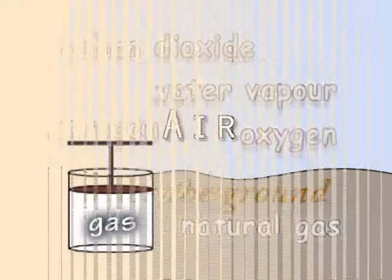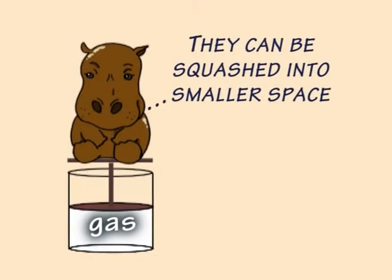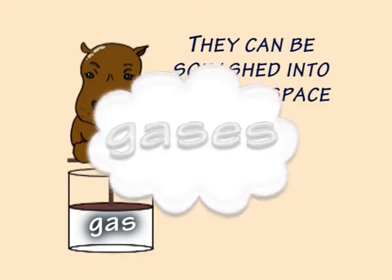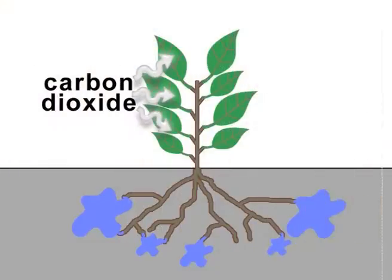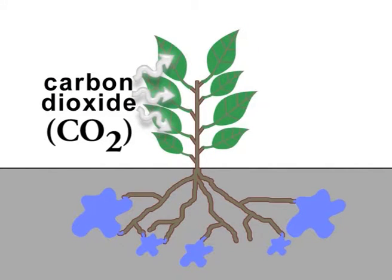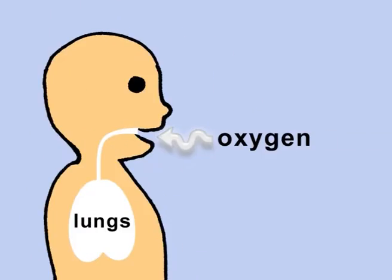They can be squashed into a smaller space, and spread out all over the place. Plants need a gas called CO2, and oxygen's the gas for me and you.